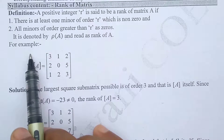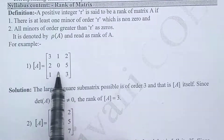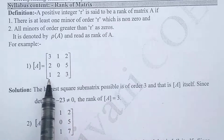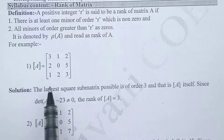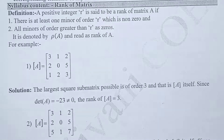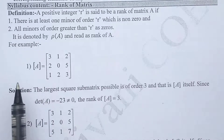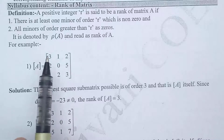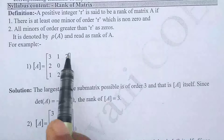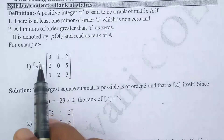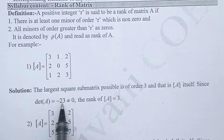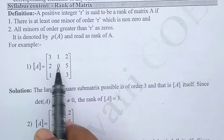For example, consider the 3×3 matrix A with first row [3, 1, 2], second row [2, 0, 5], and third row [1, 2, 3]. To find the rank using the definition, start with the minor of maximum order. Since the matrix is 3×3, we compute the determinant of the full matrix. The value of this determinant is −23.